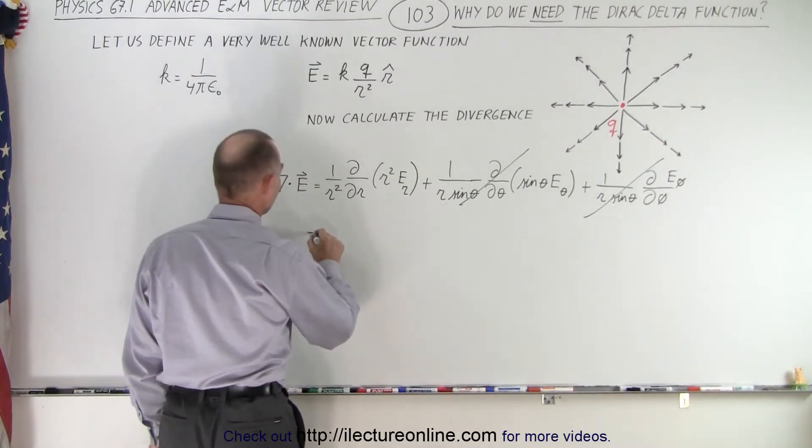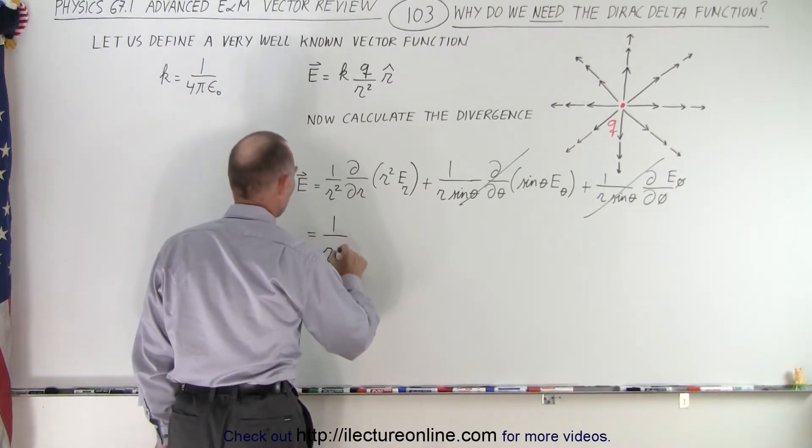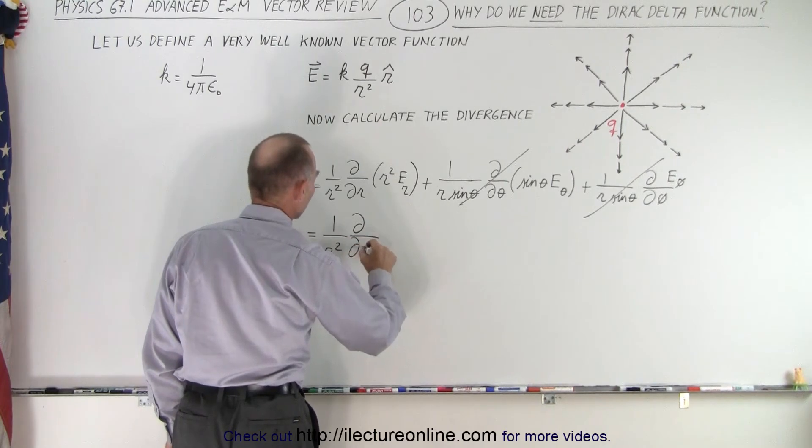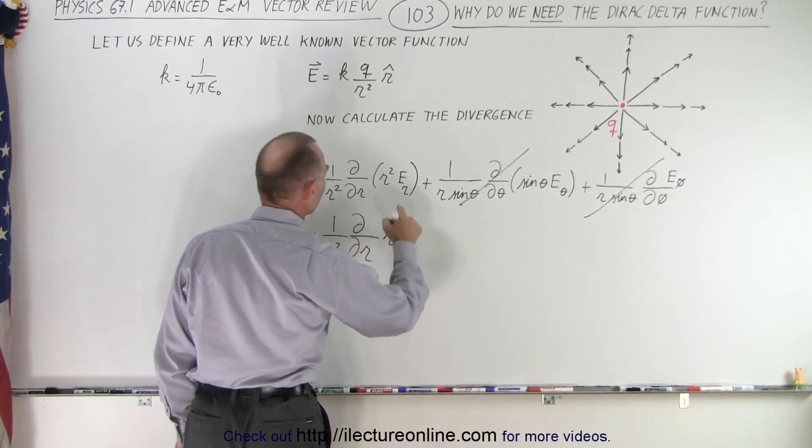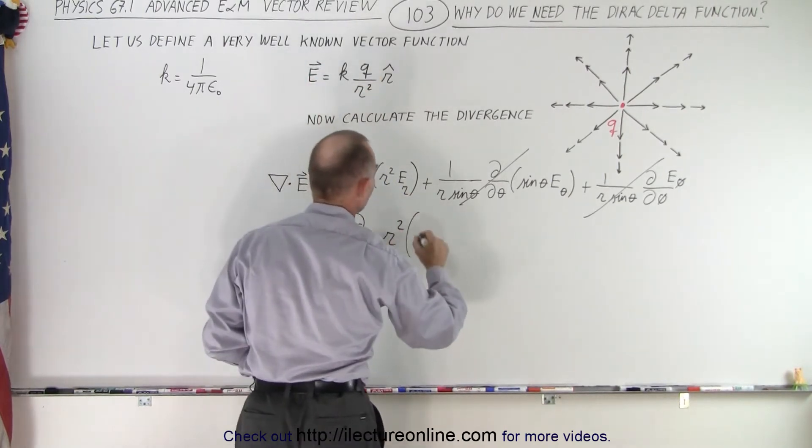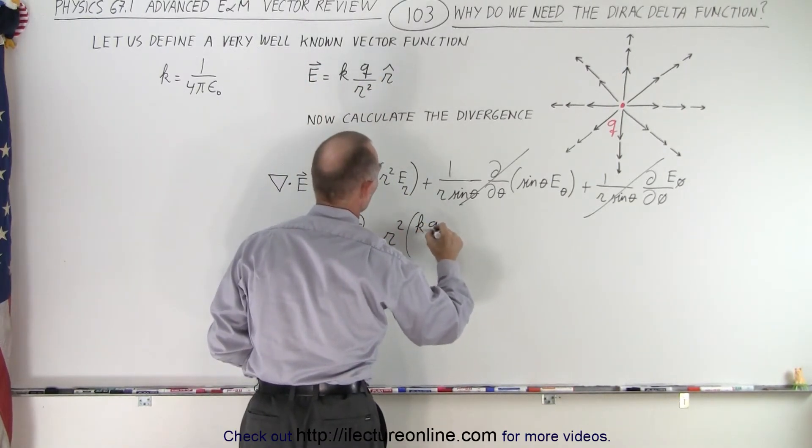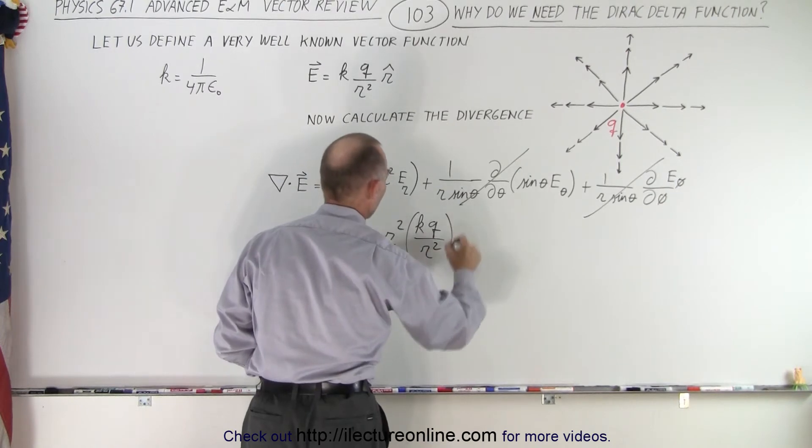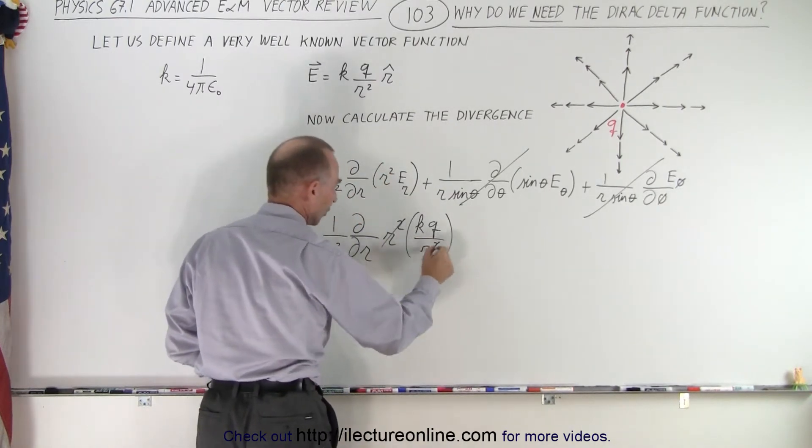So, this is therefore equal to 1 over r squared times a partial derivative with respect to r of r squared times the r component of the function, which in this case would be kq over r squared. Right away you see that r squareds cancel out, so you take the partial derivative with respect to r of k times q.